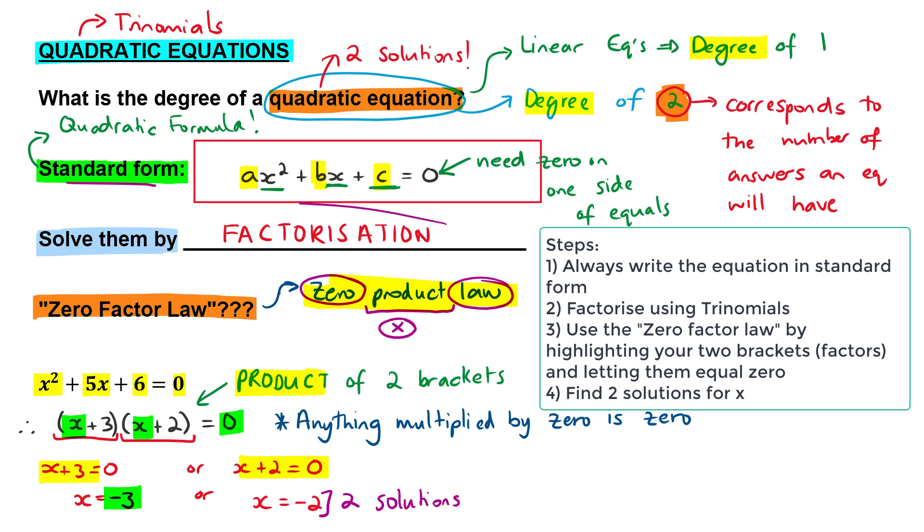Then you know that you're going to use factorization. So you can factorize your expression. And then you use that zero factor law by making each of the factors equal to zero and then solving for x. So that's how we solve quadratic equations.